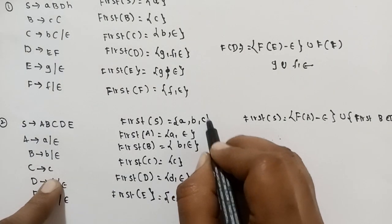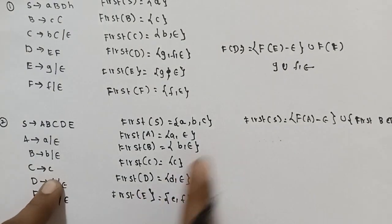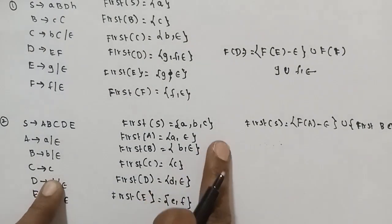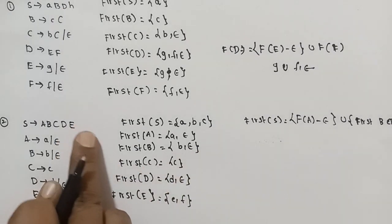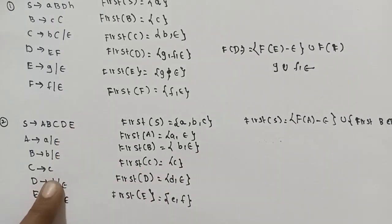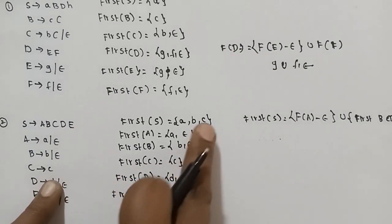For C — calculating First of C: C and I are in First of C. Calculate for C, E — First of C and E.